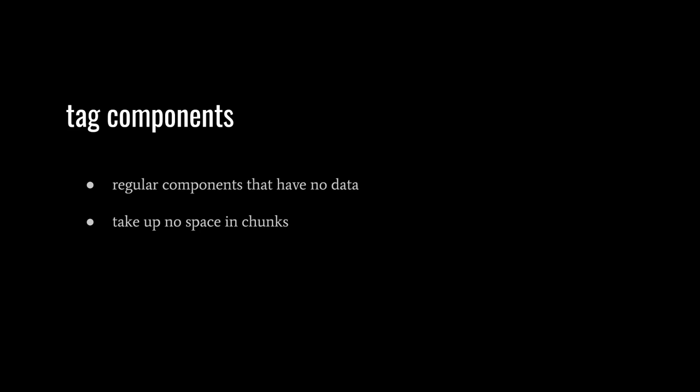A component with no data is called a tag because such components can be used to tag entities. For example, if we want only some objects to be affected by gravity, we might give only those entities a gravity tag. When we then apply gravity to entities in our code, we only query for entities with this gravity tag. Even though tag components take up no storage space, they are still part of an entity's archetype, so when we add or remove a tag component, the entity must be moved to another chunk.